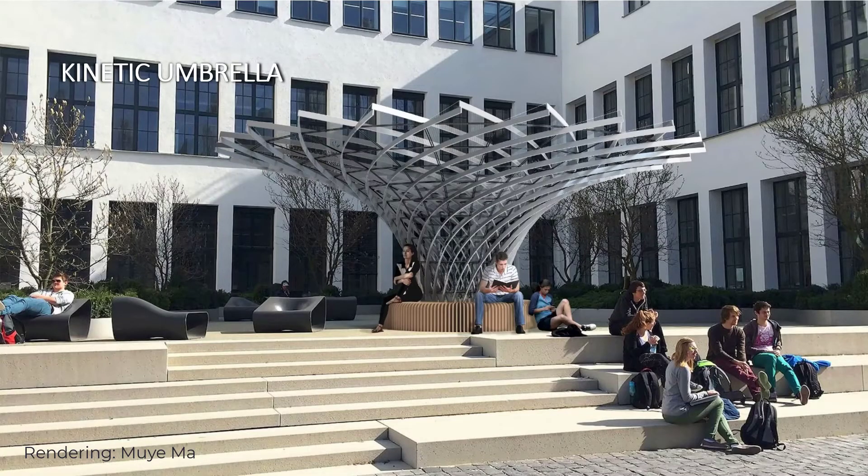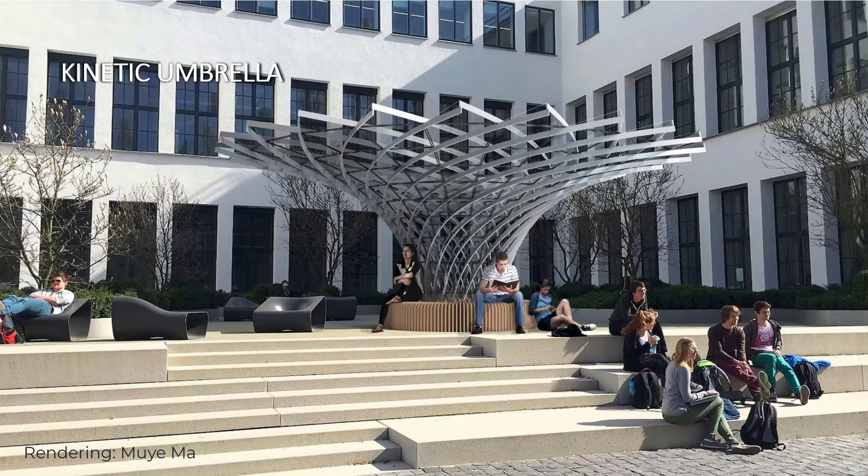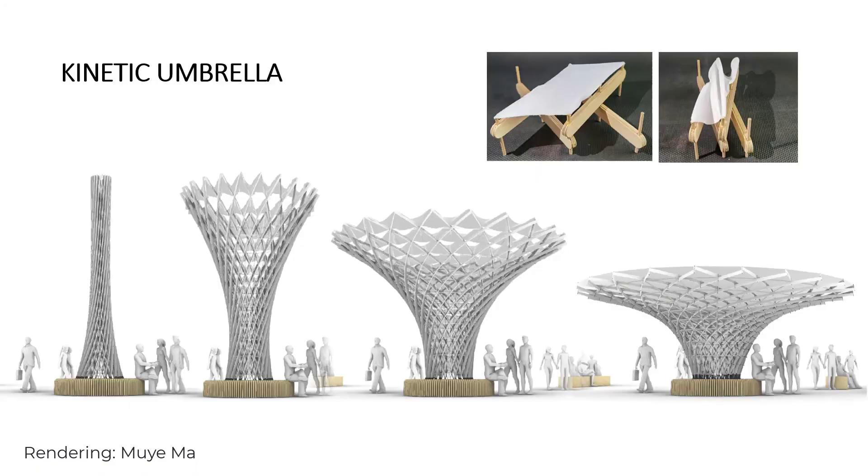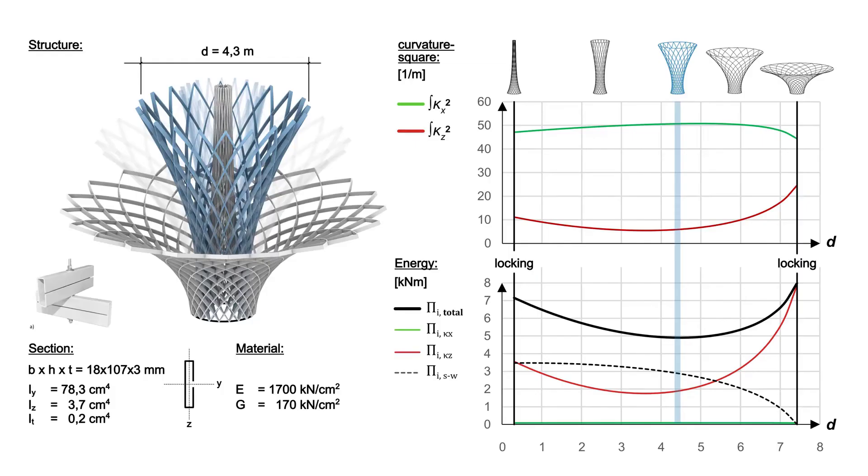Currently, the kinetic umbrella is under construction. The final assembly is shifted to summer 2021. The umbrella has a diameter of 8 meters and can be deployed whenever needed. The grid structure is based on an asymptotic network. It is covered by a system of membrane panels to protect from sun.